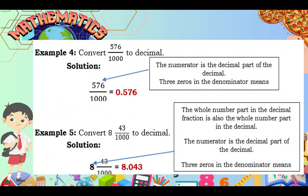Example number 4: Convert 576 over 1,000 to decimal. Now it's the reverse — fraction to decimal. 576 over 1,000: copy the numerator and it becomes our decimal. Don't forget the decimal point. 3 zeros means 3 decimal places, giving us 0.576.